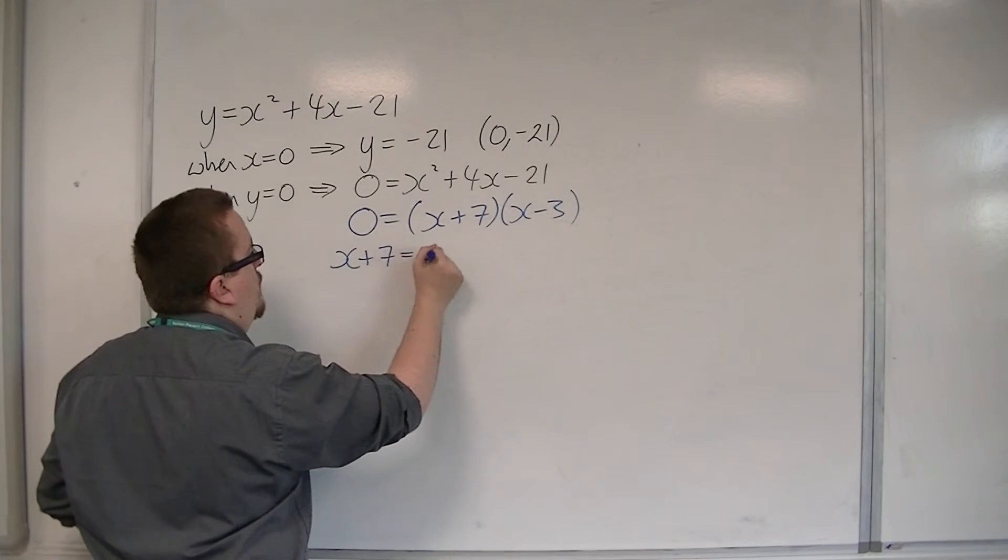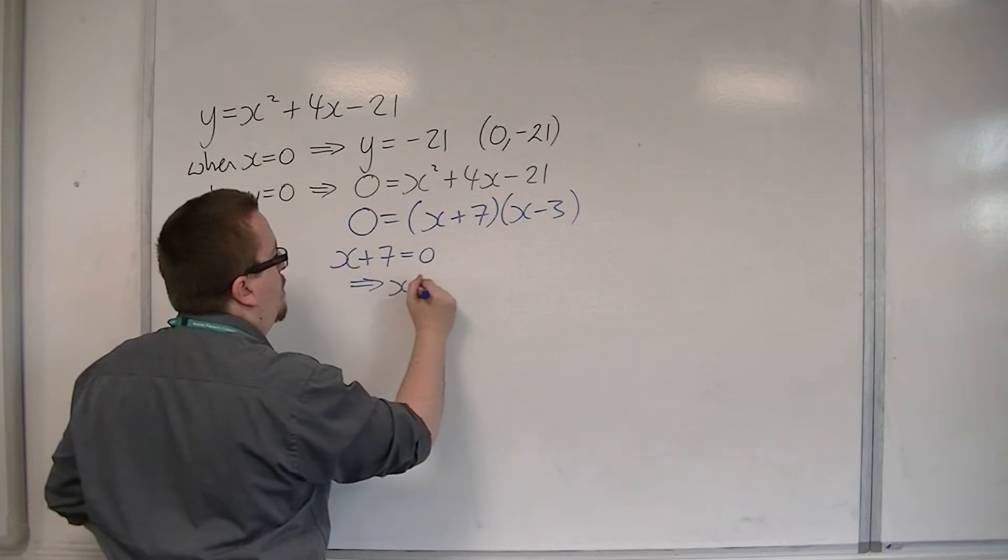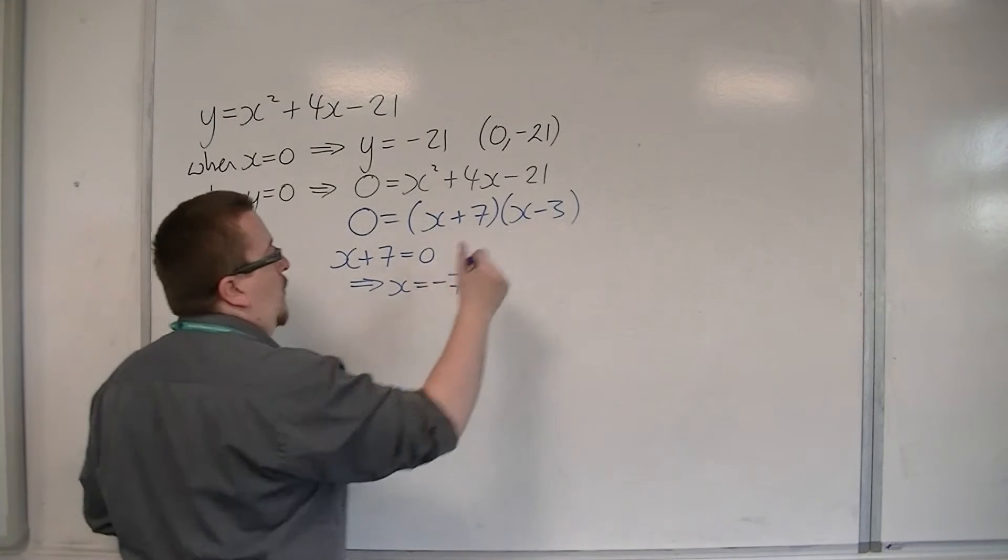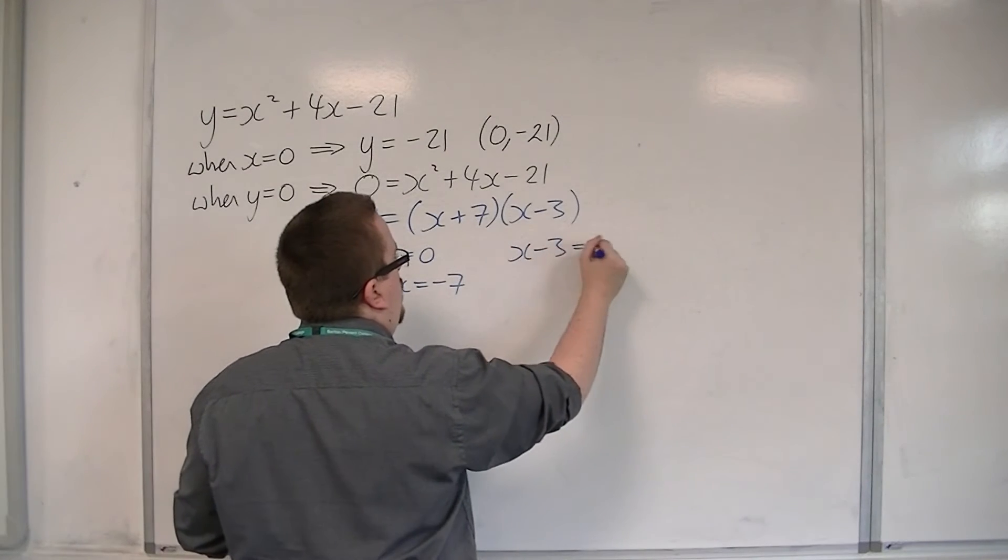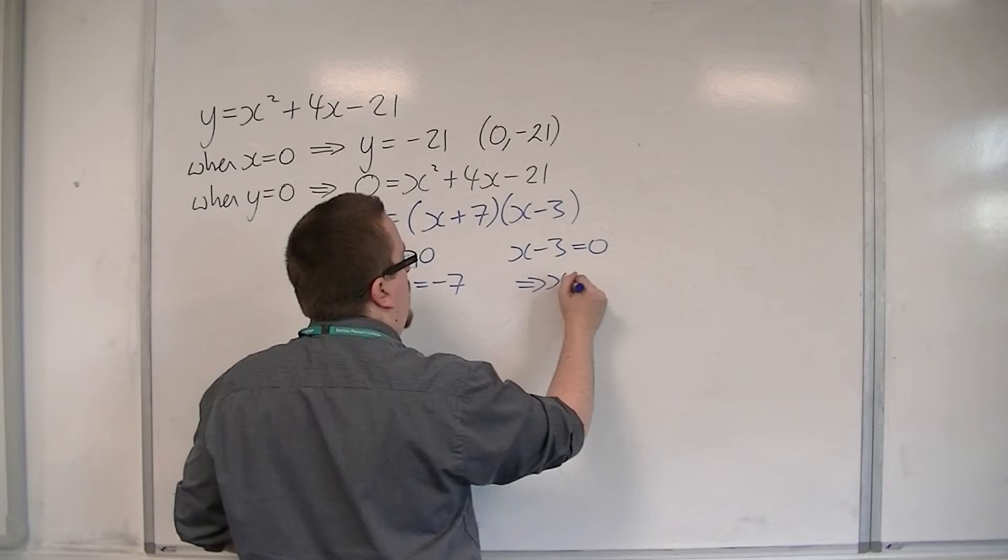So either x plus 7 is 0, in which case x is minus 7, or x minus 3 is 0, in which case x is 3.